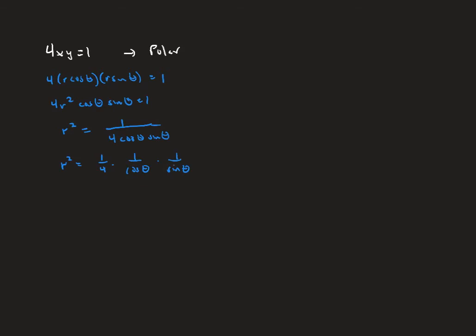Leaving the one-fourth as one-fourth, one over cosine theta is secant theta, and one over sine theta is cosecant theta. We'll stop there because square rooting really isn't going to do anything for us, and r squared equals one-fourth secant theta cosecant theta is our polar equation.